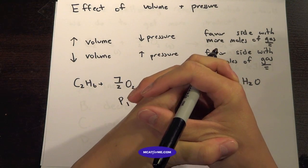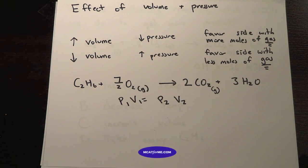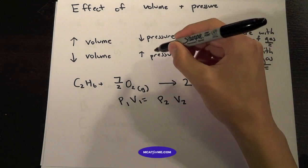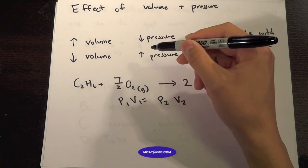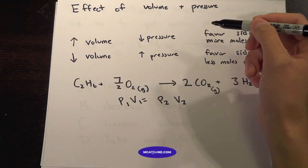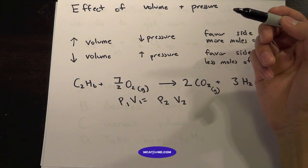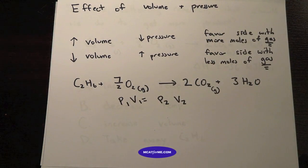Now we increase the pressure here. They're going to want to go to somewhere that has less moles of it because then that will decrease the pressure, right? We always want to reverse the changes. So if we increase the pressure, we want to somehow decrease the pressure. And the only way to do that is if we go to the side with less moles of gas.